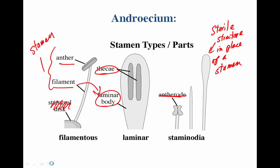A term we'll need soon is 'theca' — singular, with 'thecae' as the plural — meaning a cell, a small space, a box or container. There are essentially two thecae in an anther, which are two areas where the pollen is born. So the thecae are the places in the anther where pollen is produced. Up at the top of the anther we also see the thecae — they're not the whole anther but these two distinct parts of it.